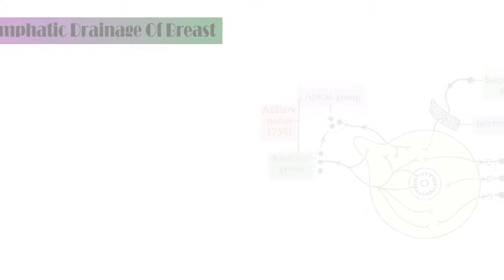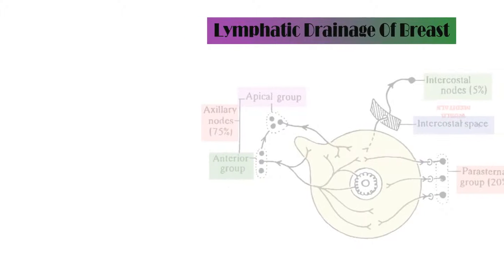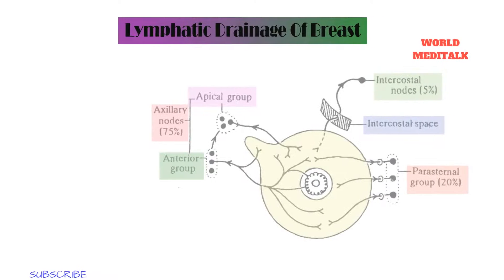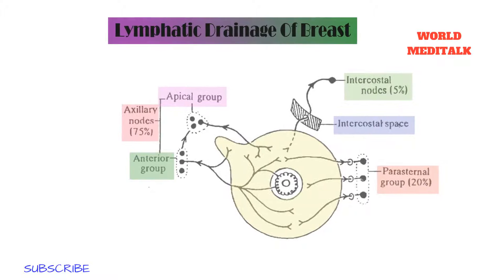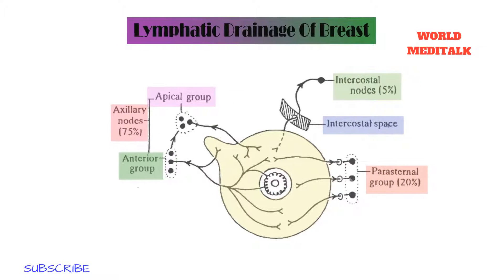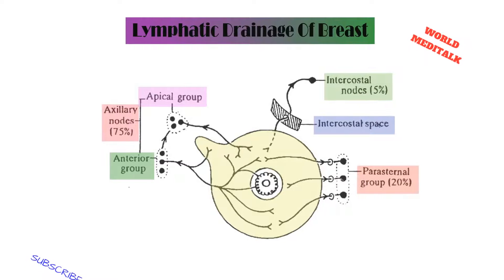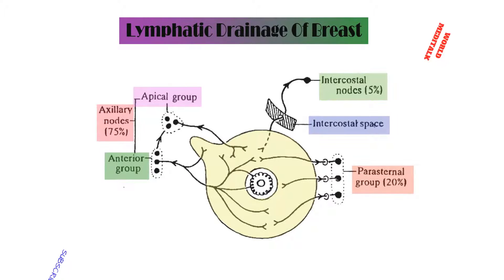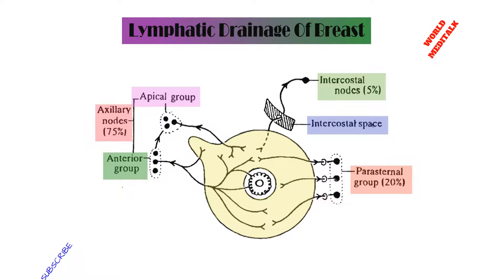The superficial lymphatics drain the skin over the breast except the nipple and areola. The lymphatics pass radially to surrounding lymph nodes — axillary, internal mammary, and supraclavicular. The deep lymphatics drain the parenchyma of the breast, nipple, and areola. 75% of the lymph from the breast drains into the axillary lymph nodes, 20% drains into the internal mammary lymph nodes, and 5% to the posterior intercostal lymph nodes, which lie in front of the head of the ribs.